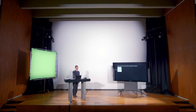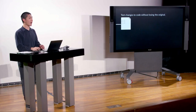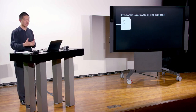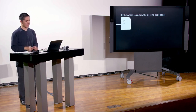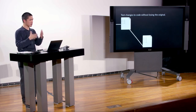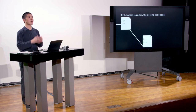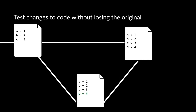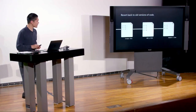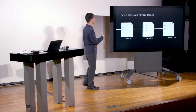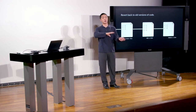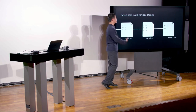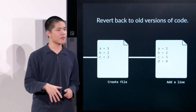Git is also very good at letting you test your code without losing your original copy. If you have a working web application and want to add a new feature but worry it might break existing functionality, Git lets you experiment without losing track of the original. Only once you're happy with the new changes can you merge them in, so you never lose a working copy. Finally, Git is very good at reverting back to old versions of your code if your most recent version doesn't work.